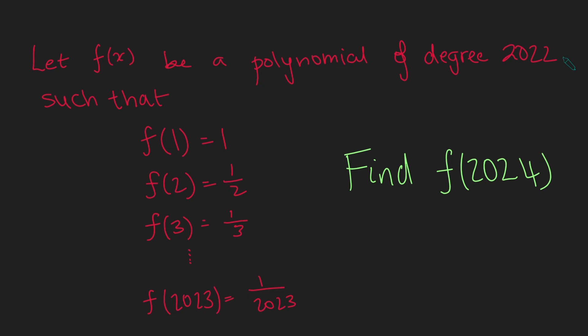Hi, thanks for joining me. Happy New Year. Today I've got a fun little polynomial problem all to do with the year 2024. We have a function f of x, which is a polynomial of degree 2022, and it has the property that f of 1 is 1, f of 2 is a half, f of 3 is a third, and so on, down to f of 2023 is 1 over 2023. We want to find f of 2024.